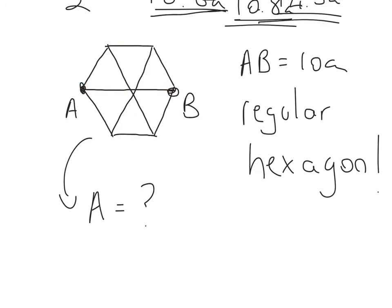So AB is equal to these other diagonals here. So to find the area of the hexagon, we can see that it's split up into six triangles. So if I find the area of one of the triangles, I can then multiply by six.